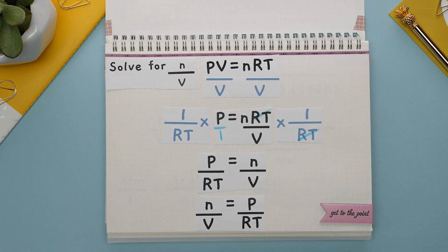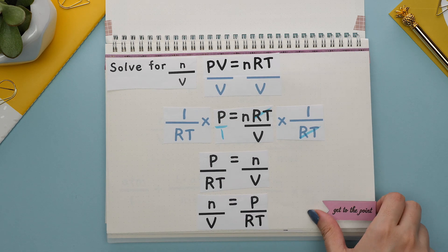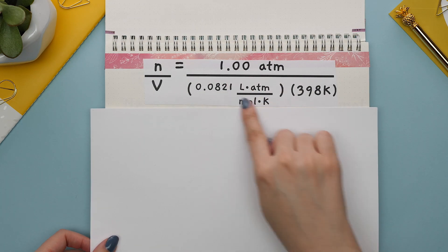The RTs cancel here and on the left side we can place a denominator of 1 here. Multiply straight across and this is what N divided by V equals. Next we'll plug in all the values we were given.